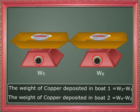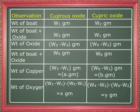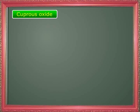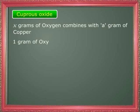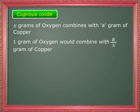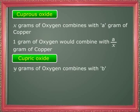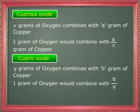Now notice the result of the entire experiment on the table. In the experiment with cuprous oxide, x grams of oxygen combines with a grams of copper, so one gram of oxygen would combine with A/x grams of copper. In cupric oxide, y grams of oxygen combines with b grams of copper, and therefore one gram of oxygen would combine with b/y grams of copper.